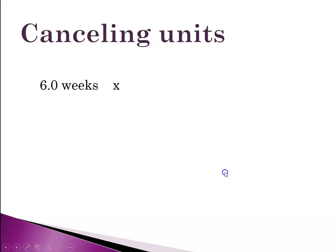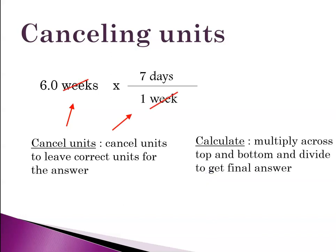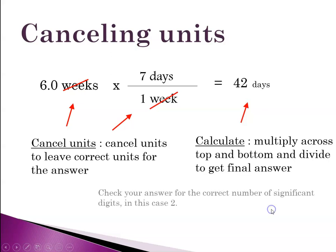And 6.0 weeks times 7 days in a week. Cancel the units to find out whether you've got the correct units for your answer. So you have week in the numerator and week in the denominator. That's going to cancel out. And then you're going to calculate 6.0 times 7 and divide it by 1 because the denominator is 1. And so your final answer here is 42 days. Check your answer for sig figs. You'll notice that you were given 6.0 weeks. That number had 2 sig figs. The answer also has 2 sig figs. So it's all good. So in this case 2 sig figs is the correct number to be reported.